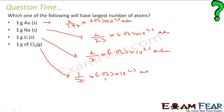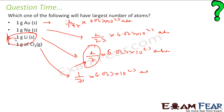We need to find which one has the maximum number of atoms. The one with the lowest denominator gives the highest number, so lithium (atomic mass 7) gives the maximum. The answer is 1 gram of lithium, because 1 gram of lithium = 1/7 × 6.023 × 10²³ atoms.